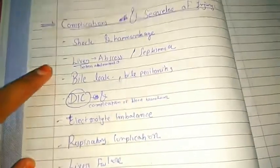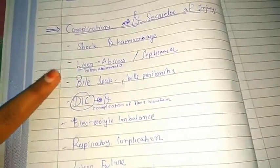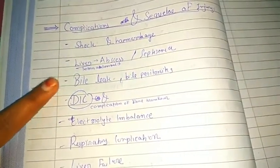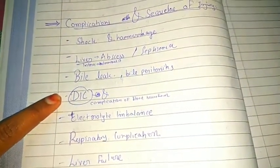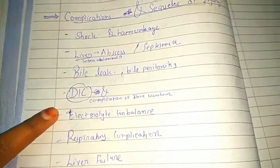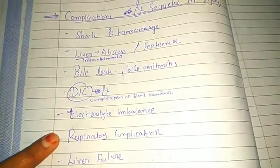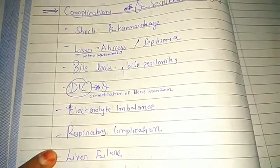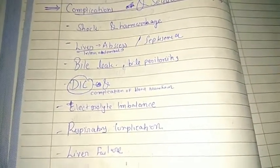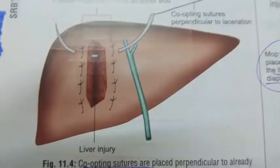To summarize complications: shock and hemorrhage, liver abscess, bile peritonitis, disseminated intravascular coagulation, electrolyte imbalance, respiratory complications, liver failure, and late obstructive jaundice.